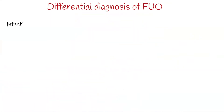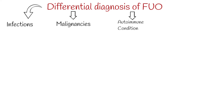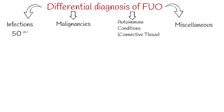The differential diagnosis of FUO is generally broken into four major subgroups: infections, malignancies, autoimmune conditions, and miscellaneous. Most cases are infections, around 50%. Connective tissue disorders can account for up to 20% of cases. Neoplasms account for around 5–35%, and miscellaneous causes around 20%.